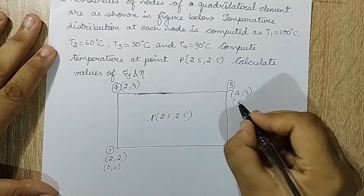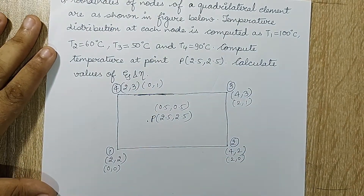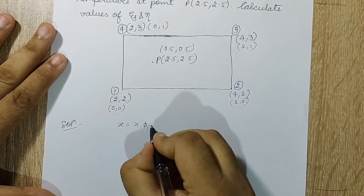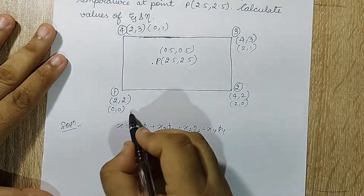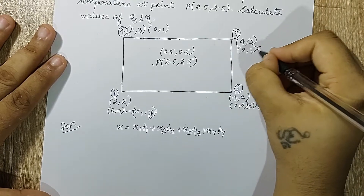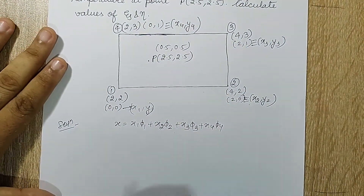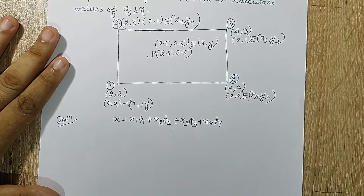So the shifted coordinates are: node 1 at (0,0), node 2 at (2,0), node 3 at (2,1), node 4 at (0,1), and point P at (0.5, 0.5). Now we know the equation for x, which is x = x1·φ1 + x2·φ2 + x3·φ3 + x4·φ4. Here x1,y1 through x4,y4 are the nodal coordinates, and I can substitute x1, x2, x3, x4 values. So I am converting this quadrilateral from rectangular coordinate system to natural coordinate system by finding the values of zeta and eta first.